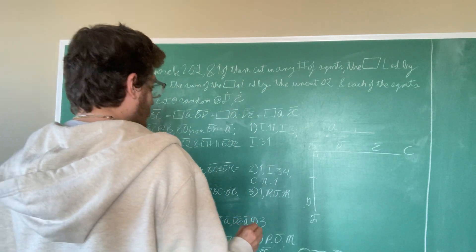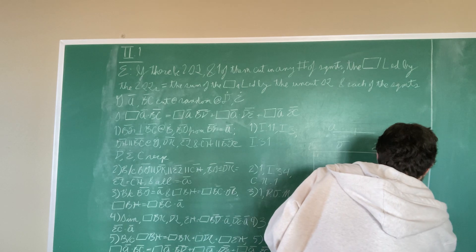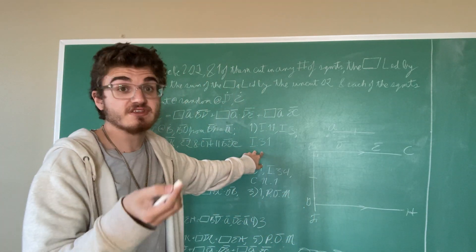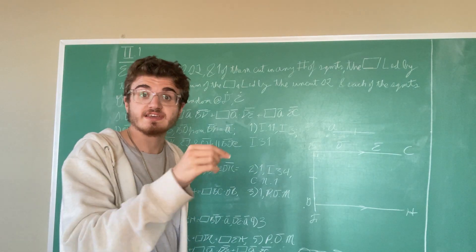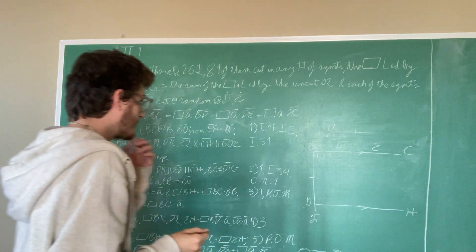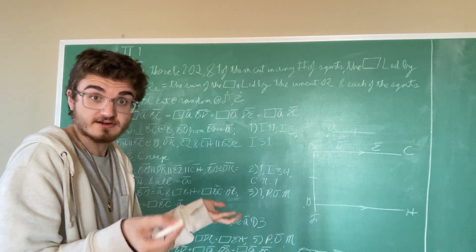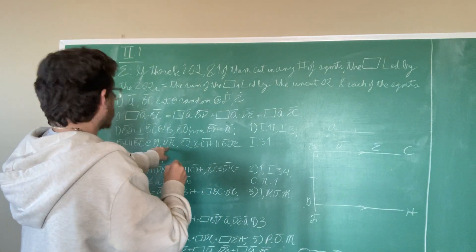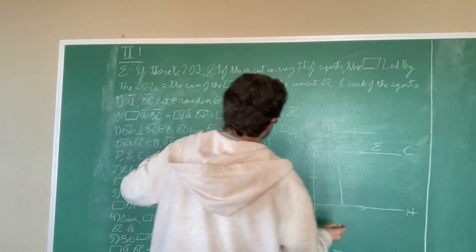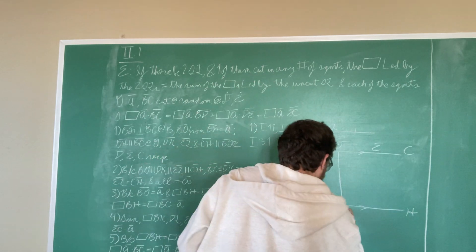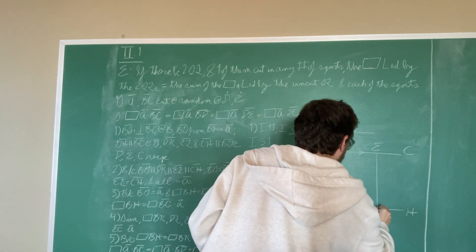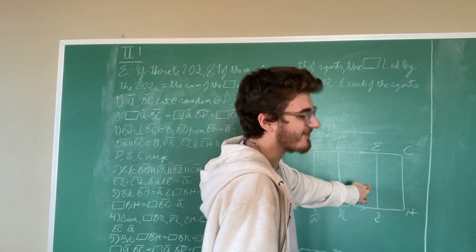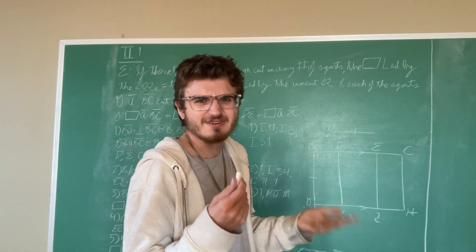Now we're going to draw GH parallel to BC from point G. We do this by Proposition I.31: to draw a straight line parallel to a given straight line through a given point. And now we use Proposition I.31 several more times in the perpendicular direction. We are going to draw DK parallel to BG, we are going to draw EL parallel to BG or DK, and we are going to draw CH parallel to BG, DK, or EL. These lines are all parallel to each other, so you can use whichever one is your reference.